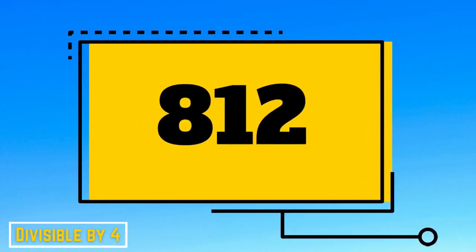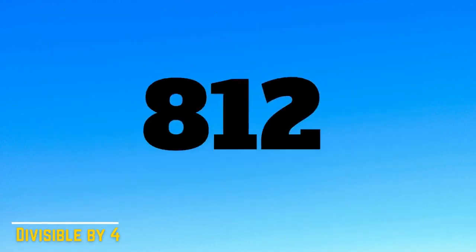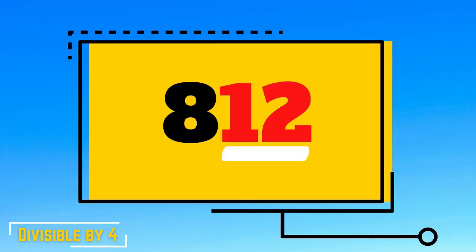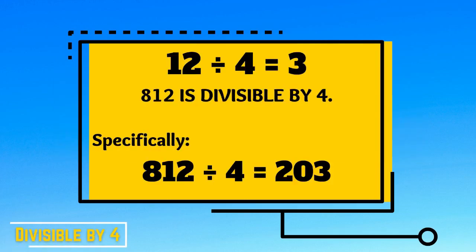For example, 812. Is 812 divisible by 4? Let's take a look at the last two digits of the number. The last two digits of 812 is 12. If we divide 12 by 4, the answer is 3. Therefore, yes, 812 is divisible by 4. Specifically, 812 divided by 4 is equal to 203.